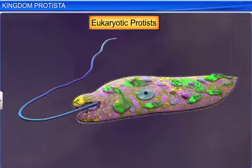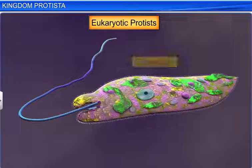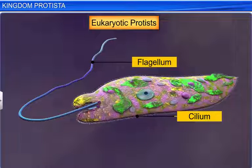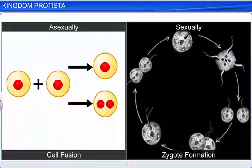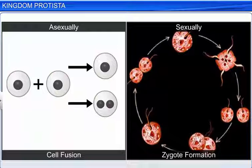Some Protists also have either a flagellum or a cilium. They reproduce both asexually, through cell fusion, and sexually, via zygote formation.